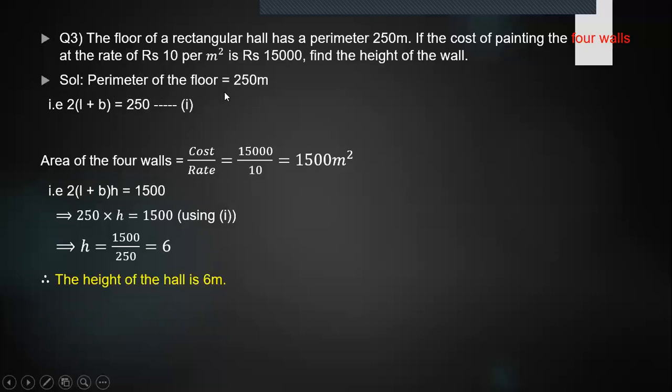You are given the perimeter of the floor as 250 meters. The formula for the perimeter in a rectangle is 2(l + b), which is going to be equal to 250. The area of the four walls will be calculated as cost upon the rate. The cost is given as 15,000, the rate is 10 and we get the area of the four walls. But the formula of the area is 2(l + b)h, which is going to be equal to 1500. But 2(l + b) is given to be 250. Substitute the value, 250h = 1500, which is giving h = 6. Since in the entire working we haven't assumed what h is going to be signified as, we should give a statement conclusion. So the height of the hall is 6 meters.